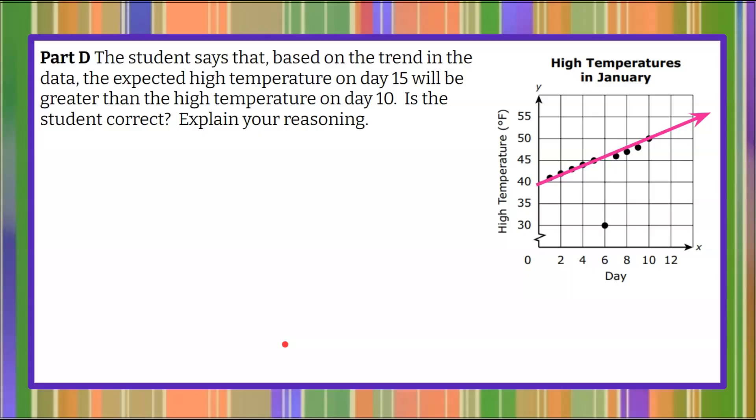And here's Part D. The student says that based on the trend in the data, the expected high temperature on day 15 will be greater than the high temperature on day 10. Is the student correct? And explain your reasoning. Pause now and then come back.